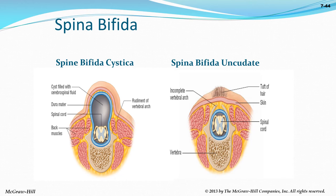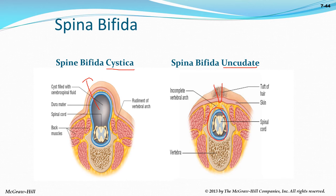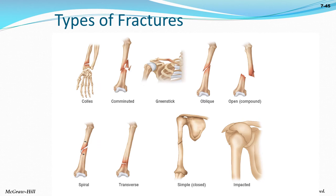Spina bifida is a condition where the spinal cord does not completely close. Cystica means the spinal cord protrudes out of the vertebral column. Occulta means everything is contained within but there's an incomplete opening. A student with a mild case of spina bifida showed a small divot in her back — mild enough that it went undetected when she joined the military.